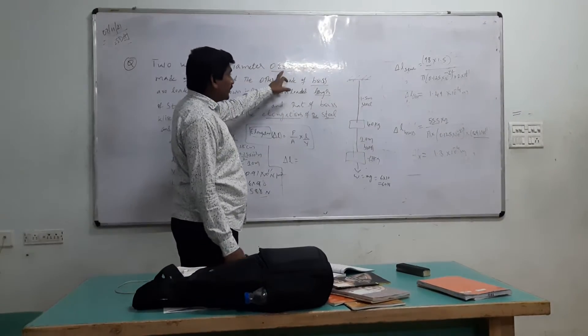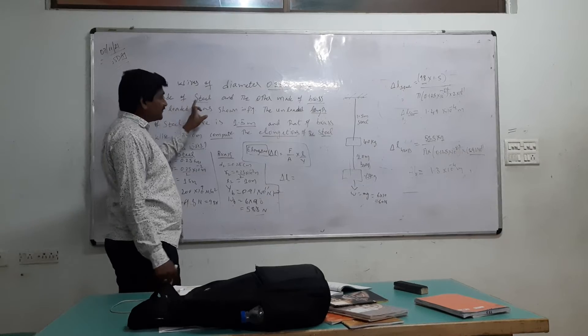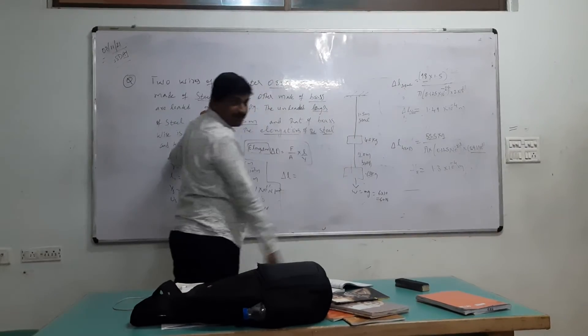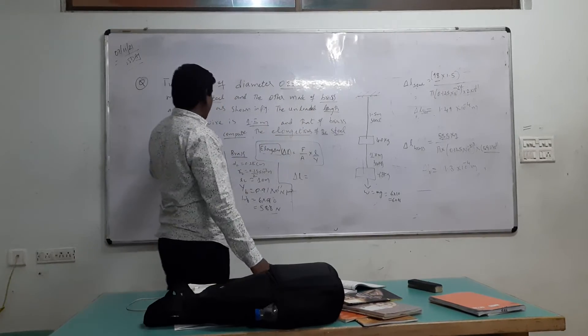Two wires of diameter 0.25 cm, one made of steel and the other made of brass.